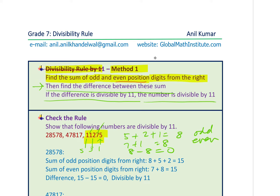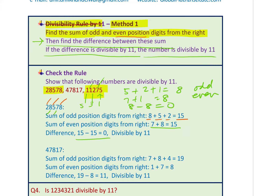Let's see the rule in detail with the number 28578. Odd positions (1, 3, 5): digits are 8, 5, 2 — sum is 15. Even positions (2, 4): digits are 7, 8 — sum is 15. Difference: 15−15=0. Since 0 is divisible by 11, the number 28578 is divisible by 11. You can verify using a calculator.